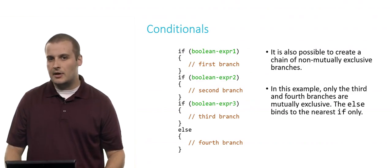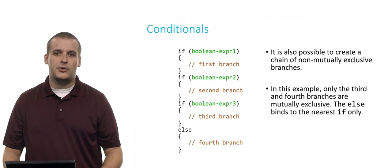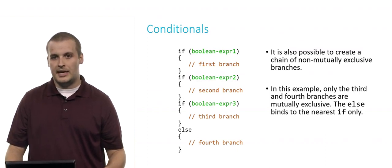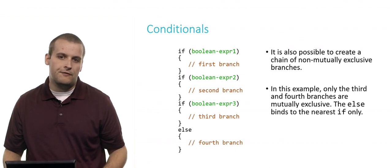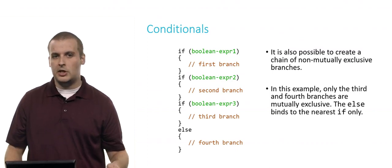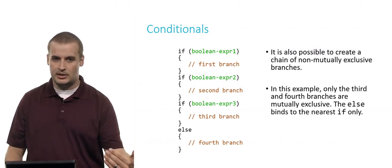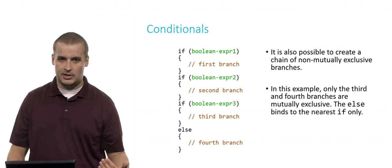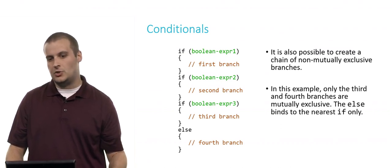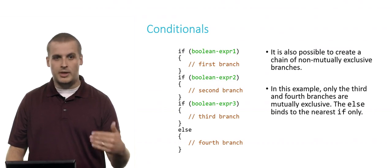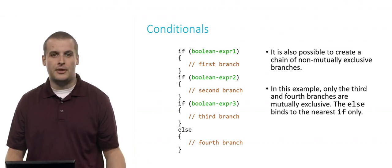It is possible, though, and sometimes very useful, to create a chain of not mutually exclusive branches. In this example, only the third and fourth branches are mutually exclusive. It could be that you could satisfy the first condition, and the second condition, and the third condition, in which case you would go down the first branch, then you would go down the second branch, then you would go down the third branch.